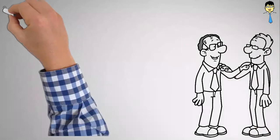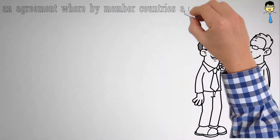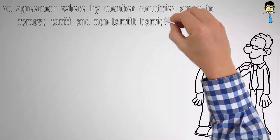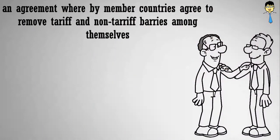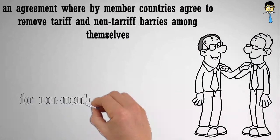A free trade agreement is an agreement whereby member countries agree to remove tariff and non-tariff barriers among themselves, but each can retain whatever restrictions it wants for non-member countries.